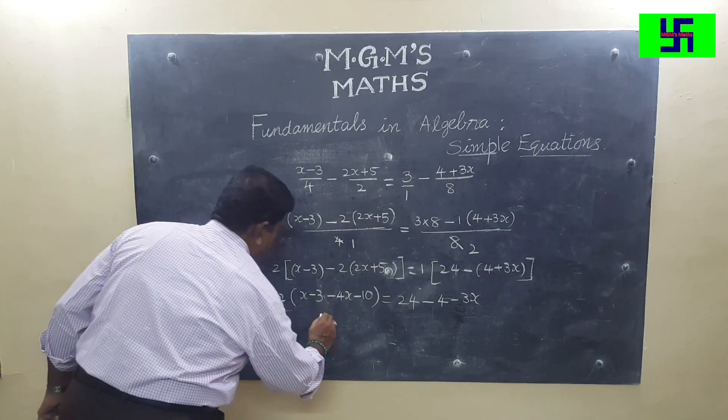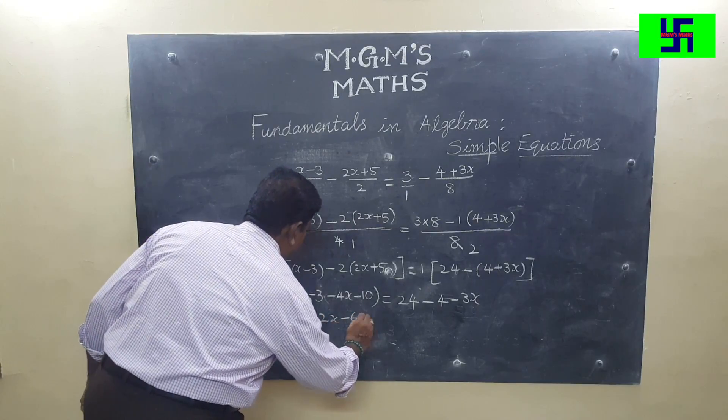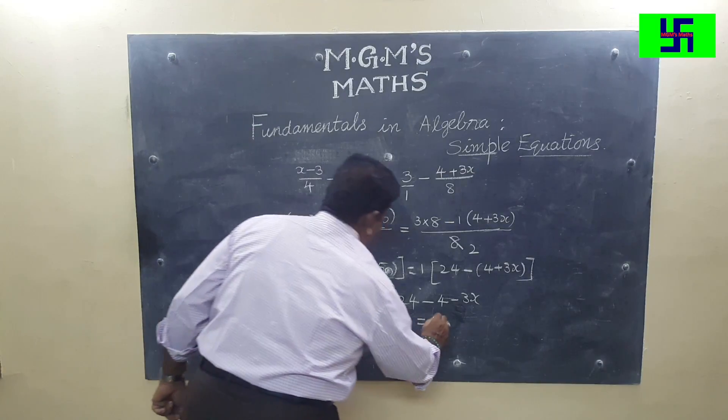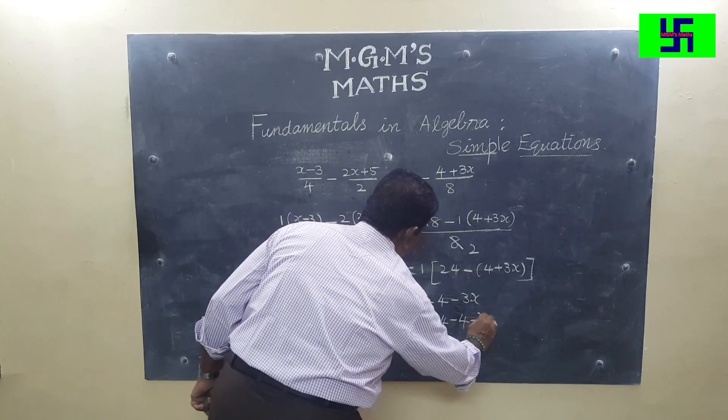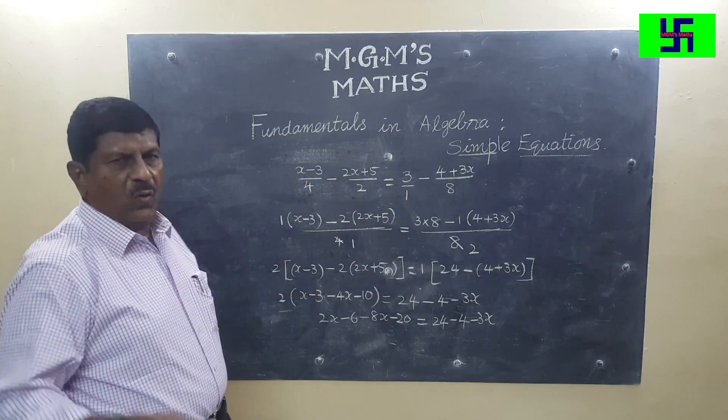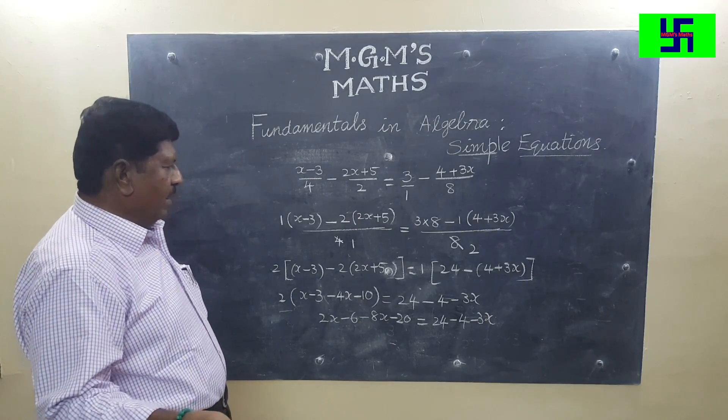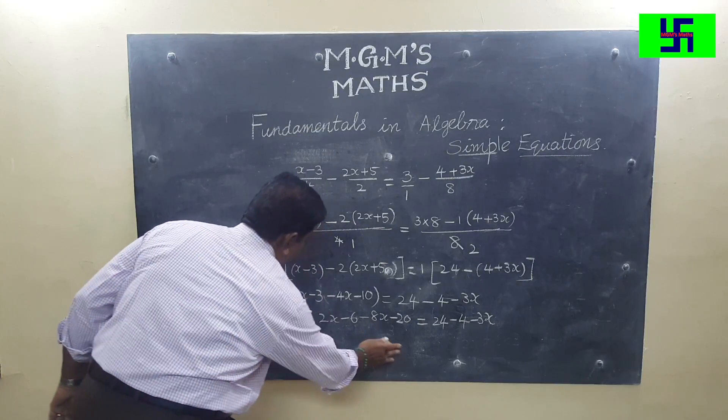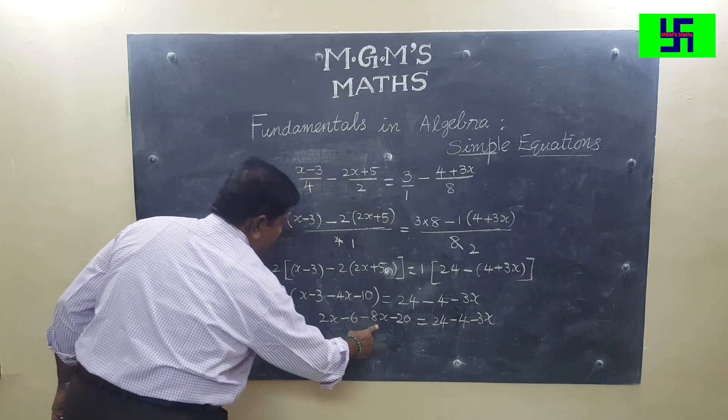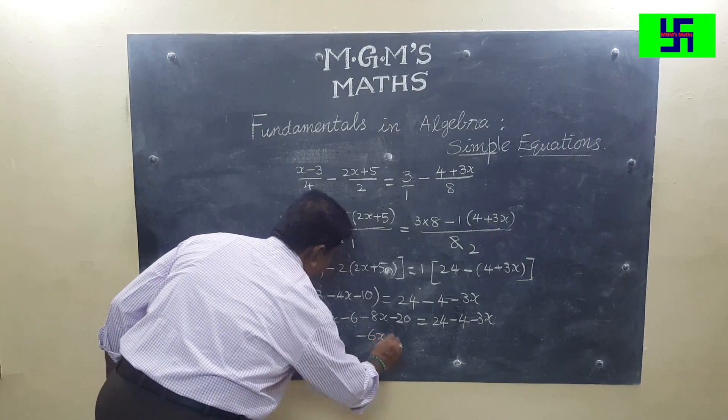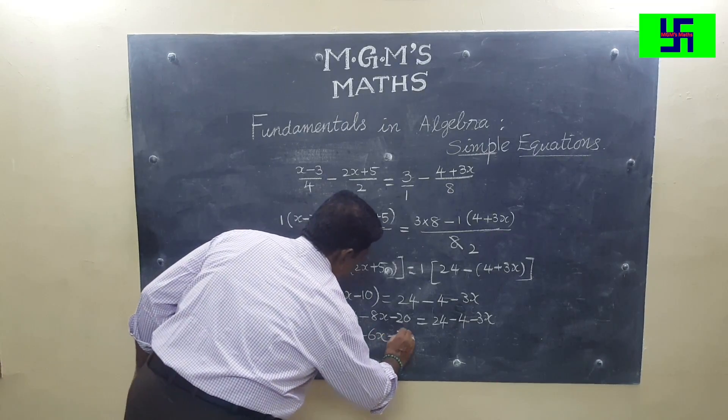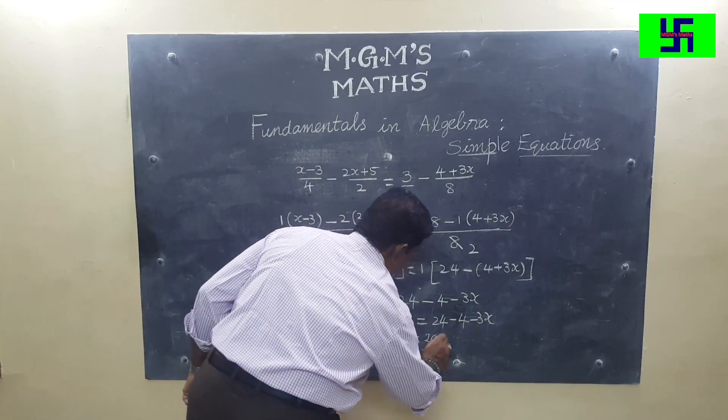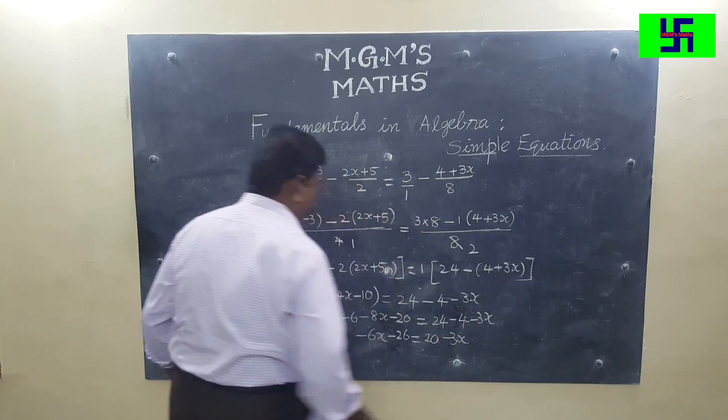Remove this bracket: 2x minus 6 minus 8x minus 20 is equal to 24 minus 4 minus 3x. If you want to simplify left hand side separately and right hand side separately, you can do that. You see here, 2x minus 8x becomes minus 6x. Minus 6 minus 20 becomes minus 26. 24 minus 4 is 20. Here minus 3x.